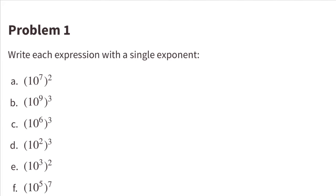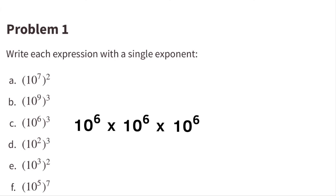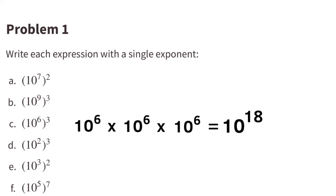Part C: 10 to the 6th power, all cubed. That means 10 to the 6th times 10 to the 6th times 10 to the 6th. Exponent 6 plus 6 plus 6 equals exponent 18. So 10 to the 6th power all cubed equals 10 to the power of 18.